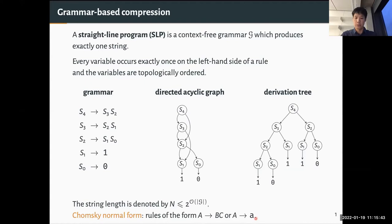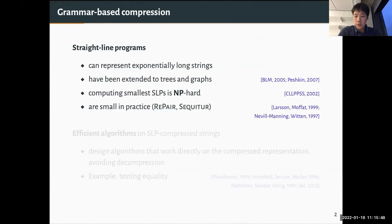Straight-line programs can represent exponentially long strings. If you are interested in more structured data like trees or graphs, there are also formalisms for that. Computing the smallest compression — the smallest SLP for a given string — is an NP-hard problem, but there are practical algorithms like RePair which tend to work quite well on practical data.